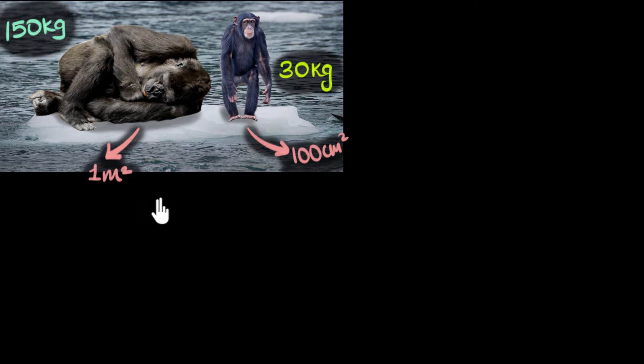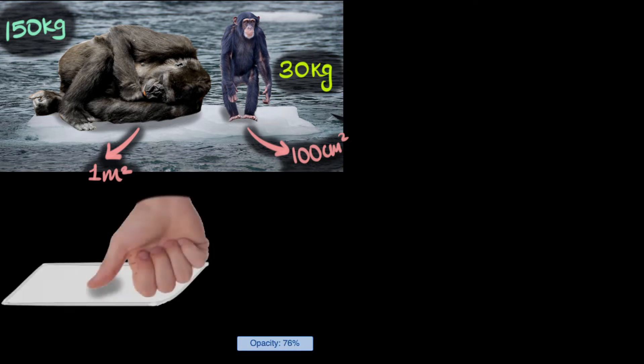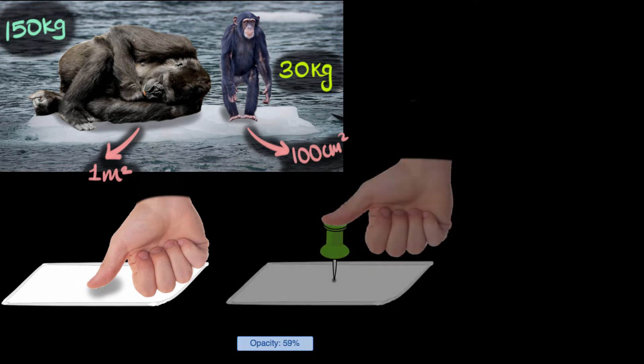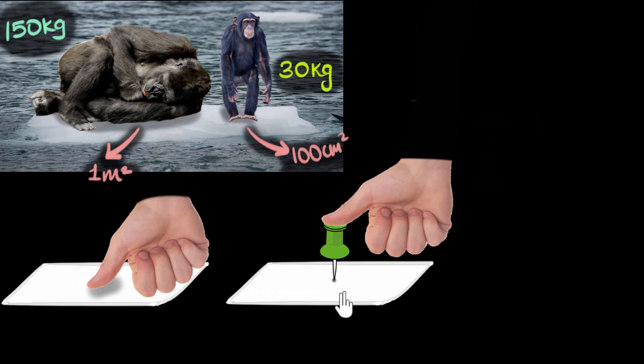But it also depends upon how concentrated that force is. For example, if you were to push on a paper with your thumb, there's a good chance you won't pierce through that paper, right? On the other hand, if you were to put that same force on that same paper, but now you were to push it through a pin, I'm pretty sure you can easily puncture that paper. Pierce through that paper, right?